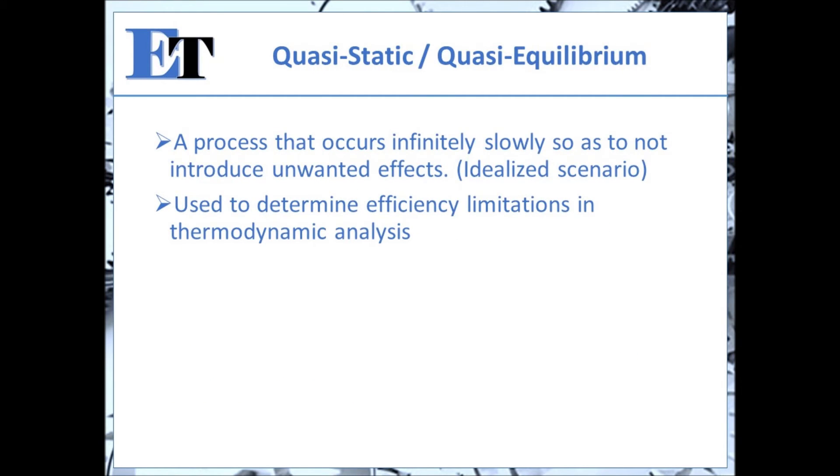One assumption that is often used in thermodynamic analysis is quasi-static or quasi-equilibrium. In a quasi-static process, it is assumed that the thermodynamic process occurs infinitely slowly in order to prevent unwanted effects such as friction, drag, or heat loss. This assumption is typically used to determine the most efficient manner in which a process can occur. While this assumption tends not to be realistic, it is instrumental in helping you to determine the maximum efficiency you can obtain with a thermodynamic process.